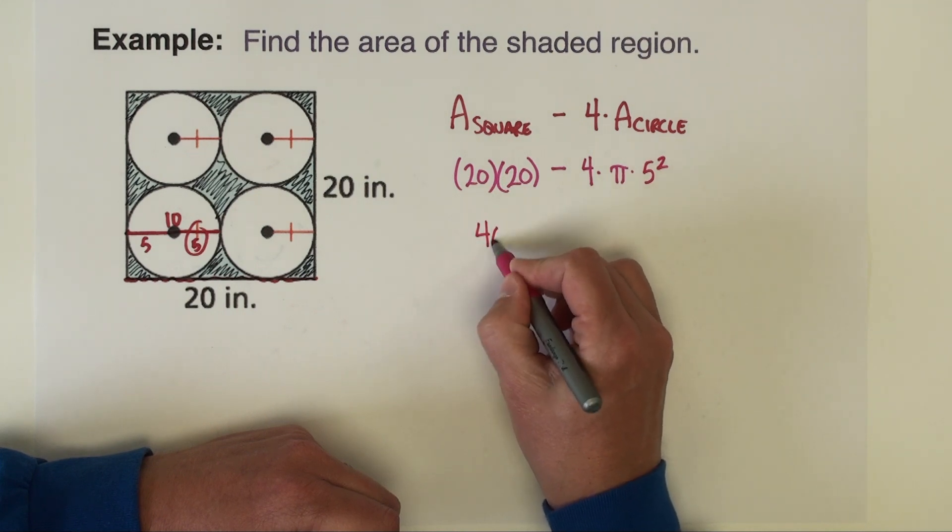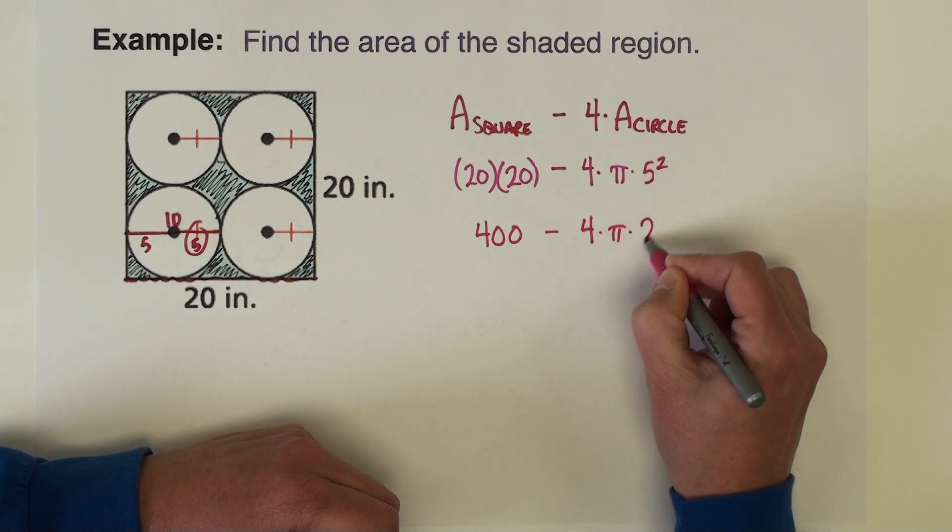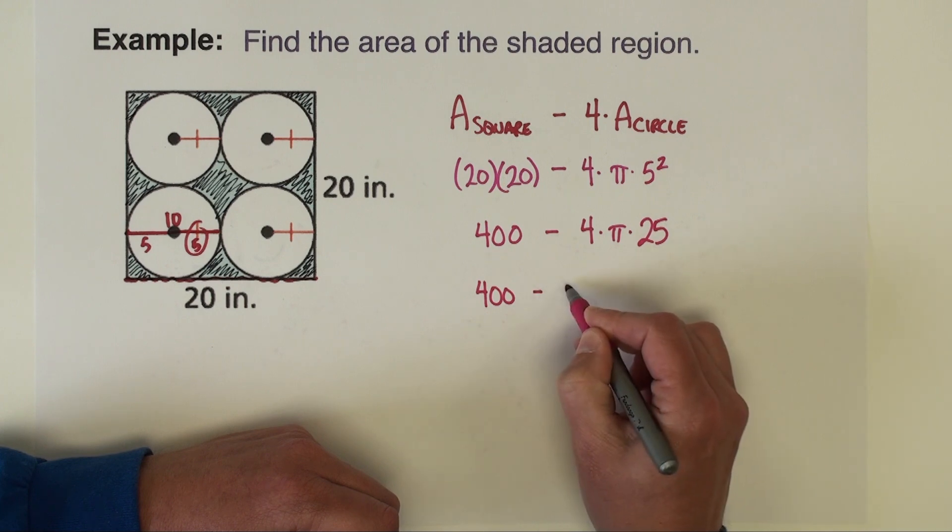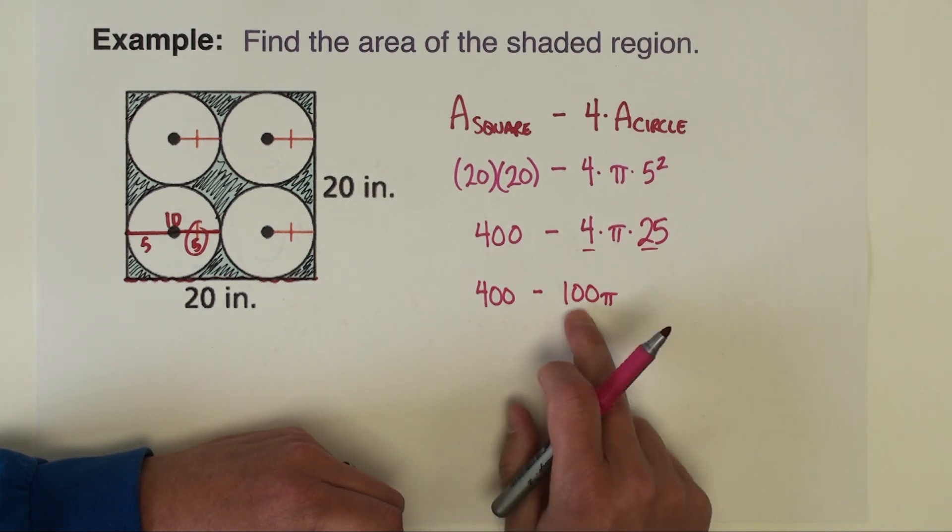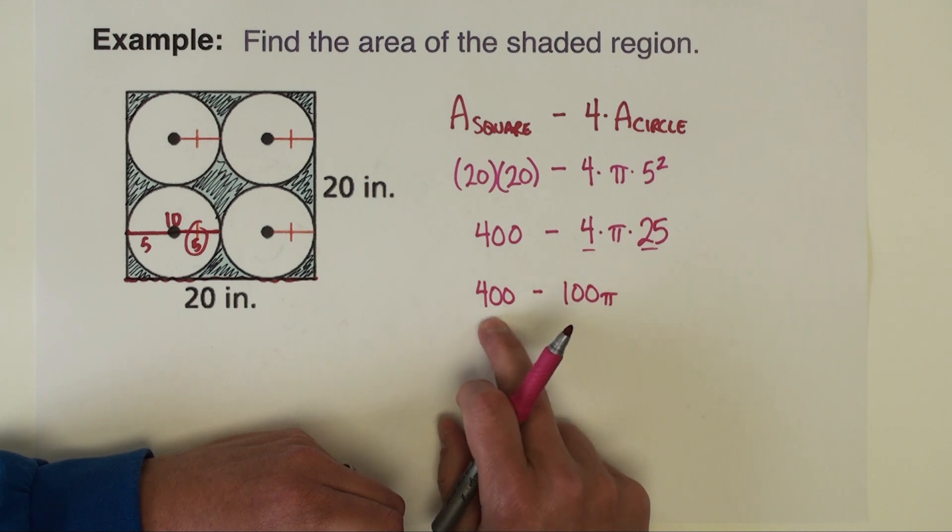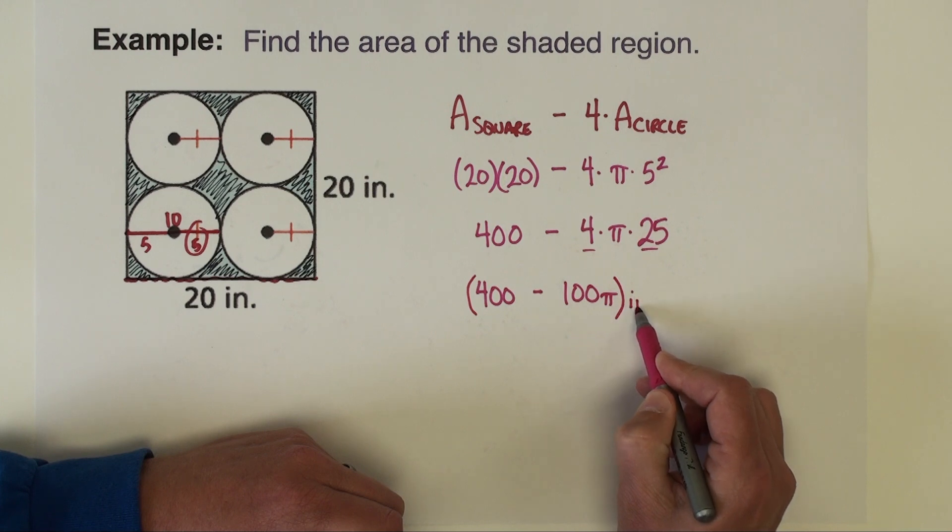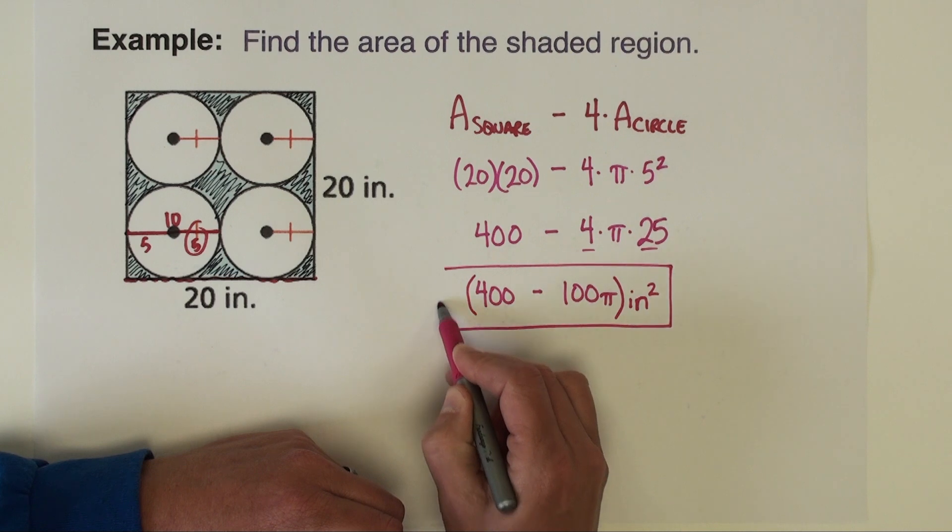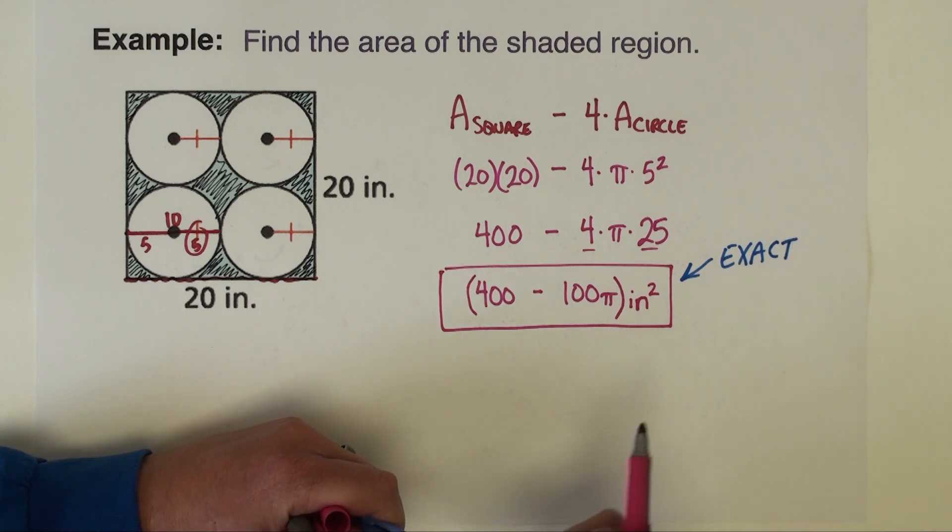All right, 20 times 20 is 400 minus 4 times pi times 5 squared is 25. So we have 400 minus 4 and 25 is 100 pi. Now I can't put these two numbers together because this one has pi and this one doesn't. So if I wanted an exact answer, I'm going to go ahead and put units on this. It's area, so we have inches squared. And that would be finished. Again, if we want an exact answer, that's it.